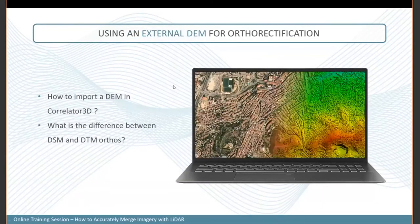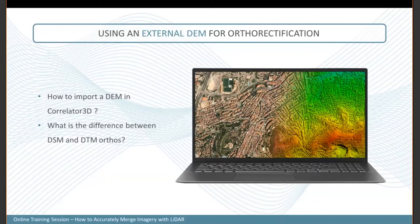Once your AT is done, you can skip the DEM extraction from photos and use the LiDAR DSM or DTM directly. If your customer provided a raster-based LiDAR surface or terrain model, you can import a GeoTIFF raster directly into Correlator 3D and use it for orthorectification of your images. To import an external DEM without a LiDAR LAS file, go into your project tree, find the DEM section, and click the plus button to add a DEM file.